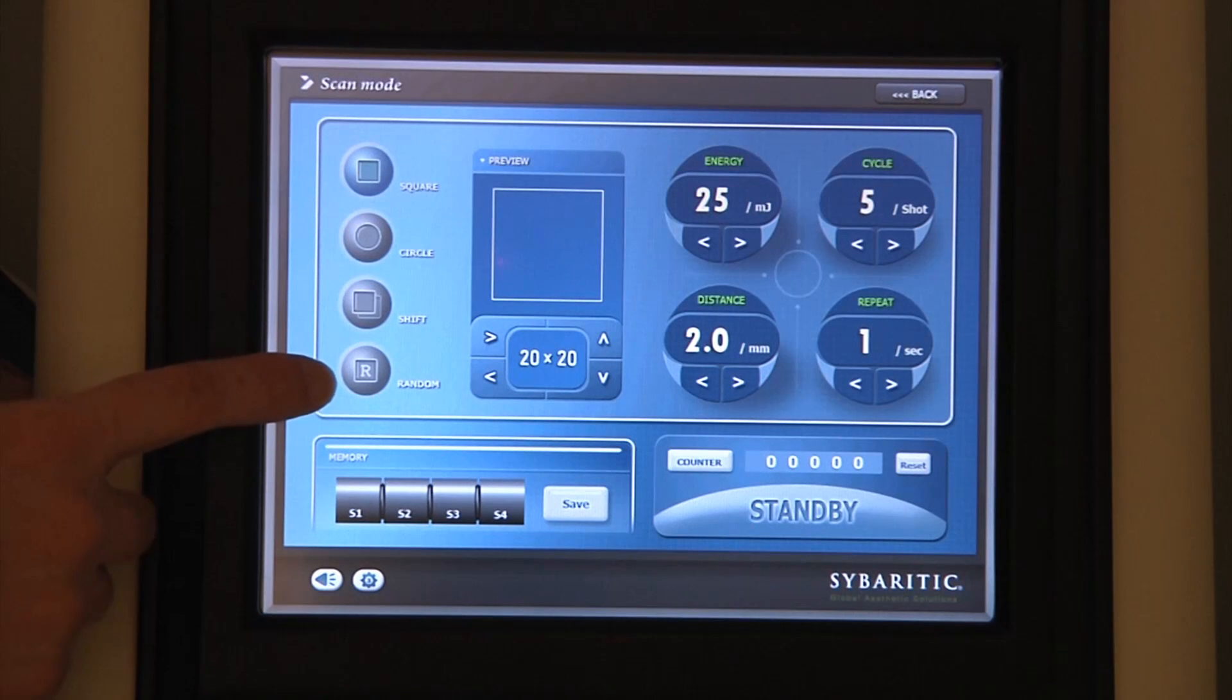In the random button, this enables us not to create a linear deposition of energy through the spots, but actually to deliver them randomly throughout the scan area. The benefit of this is if we are using a very high dot density and we want to minimize local heating effects.